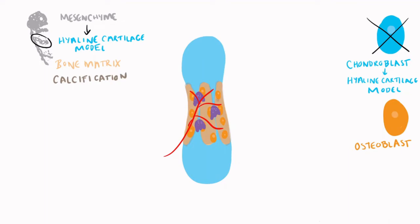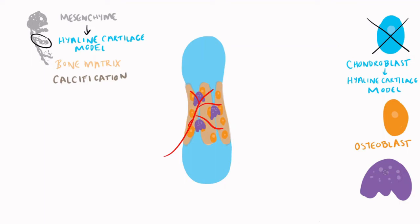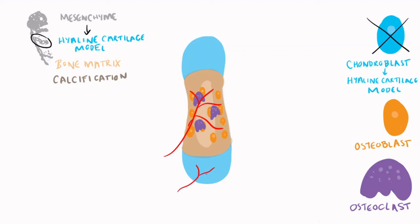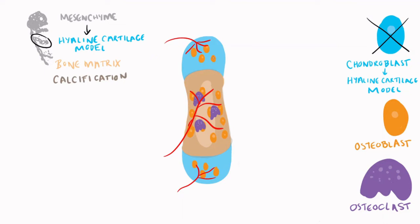Osteoclasts enter to remove debris and begin the formation of trabeculae and of the medullary cavity. Working together, osteoblasts build up bone where osteoclasts remove bone. Next, blood vessels infiltrate the epiphyses at what are called the secondary ossification centers. Here, osteoblasts form bone and osteoclasts resorb bone to form trabeculae of the spongy bone.